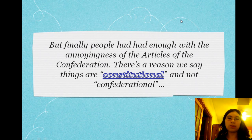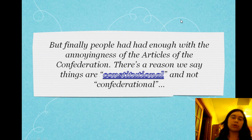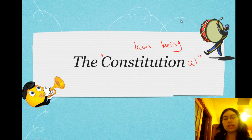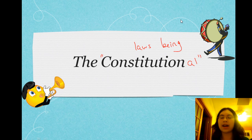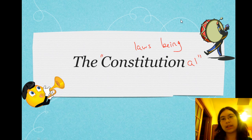Even with cool things like the Northwest Ordinance and the Land Ordinance of 1785, the Articles of Confederation mostly sucked — they were very annoying and hard to deal with. Finally, people had enough. There's a reason we say things are constitutional and not confederational — the Constitution came about. The Constitutional Convention required blood, sweat, and tears. If you think the Founding Fathers were a sedate group who just sat around discussing high and mighty issues and never argued, that is not true — the Founding Fathers argued a lot.